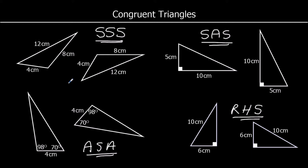So those are the rules we need to know for congruent triangles — these are the only rules we are looking for. To prove that two triangles are identical, we need to show either: three sides are the same (SSS), two sides and the angle in between them (SAS), or two angles with the side in between them (ASA).